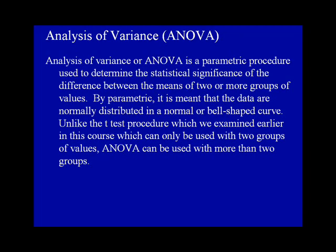Analysis of Variance, or ANOVA, is a parametric procedure used to determine the statistical significance of the difference between the means of two or more groups of values. By parametric, it is meant that the data are normally distributed in a normal or bell-shaped curve.